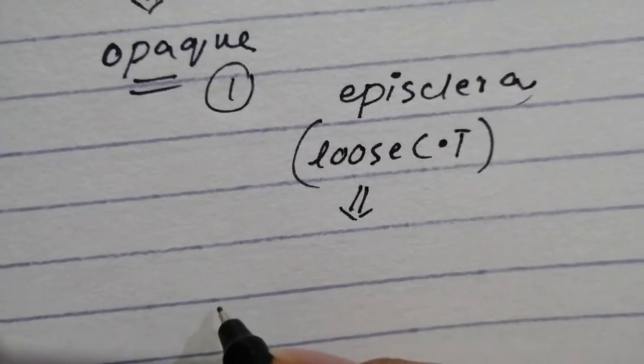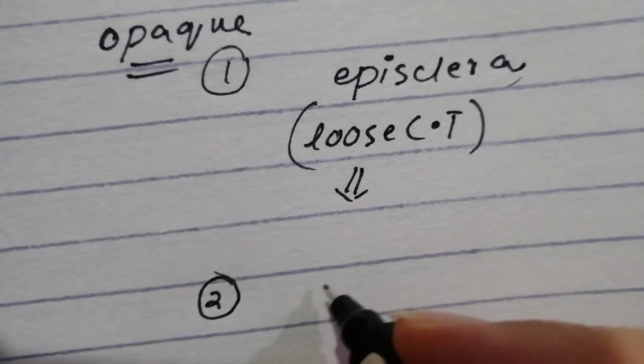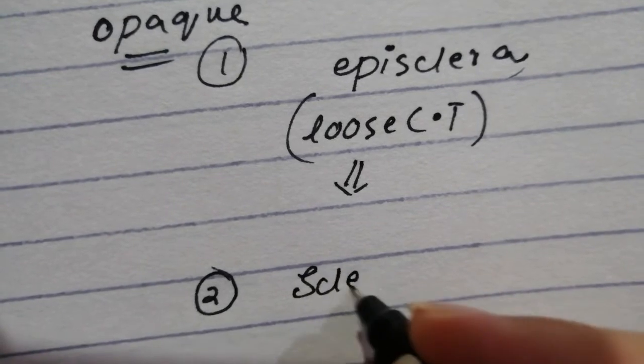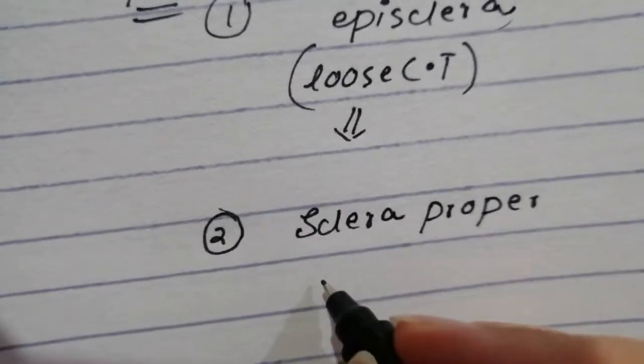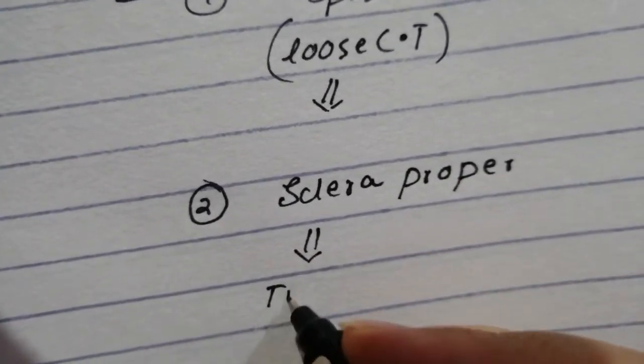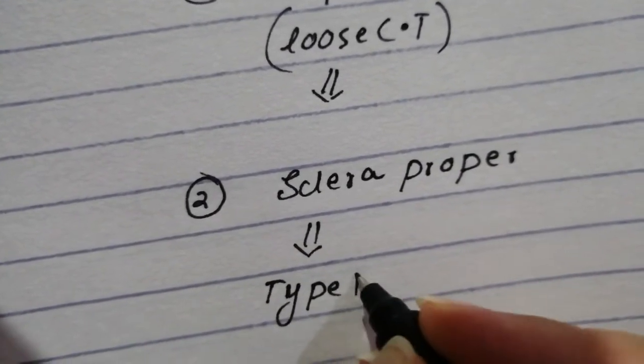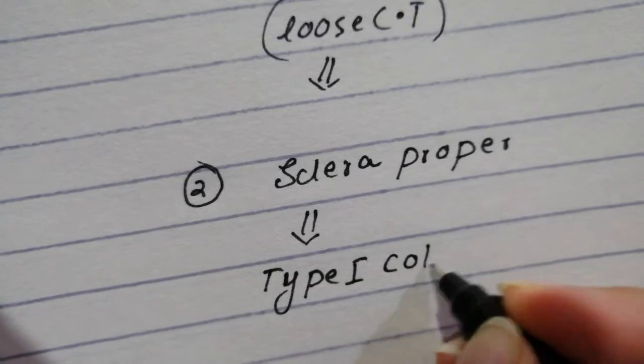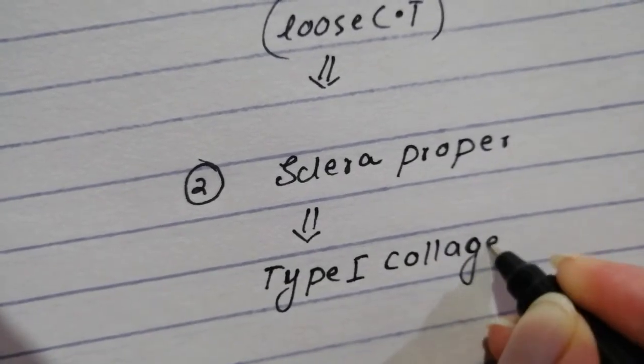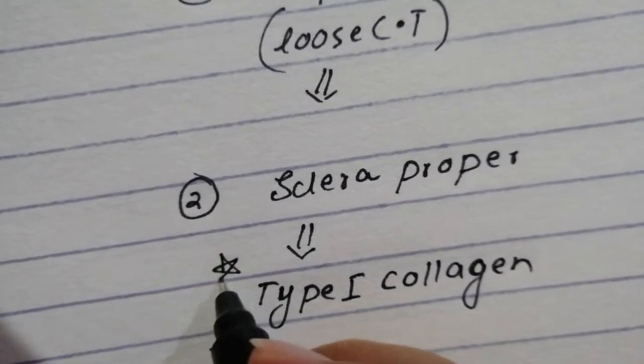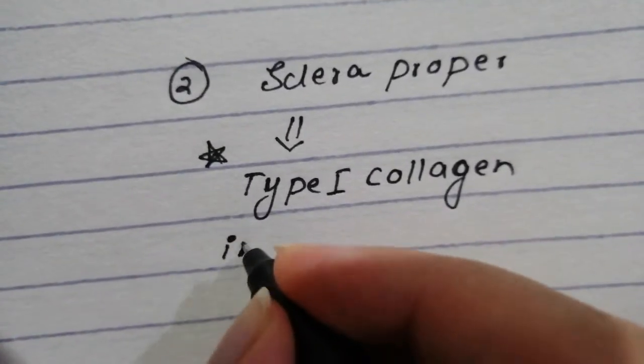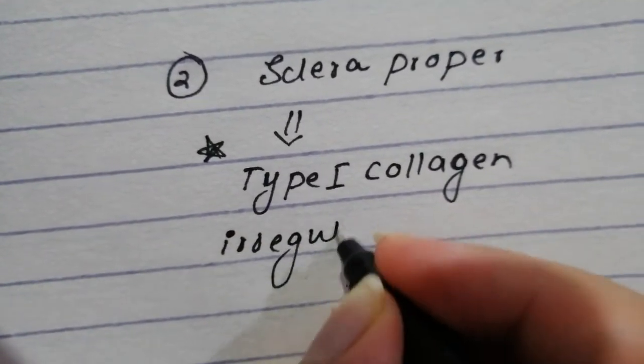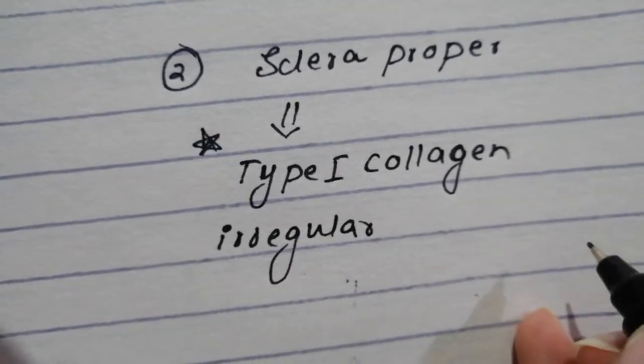Then we have the sclera proper. The sclera proper is very fibrous. In fact it contains a lot of type I collagen. But because the collagen is irregularly arranged it leads to the opacity of the sclera as opposed to that of the cornea.